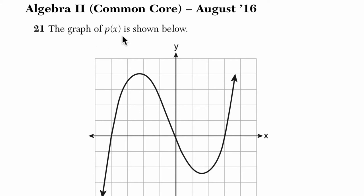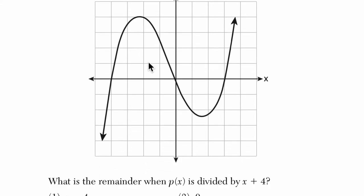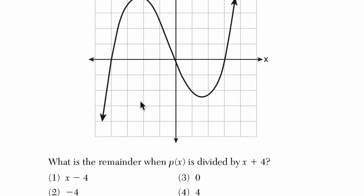It says that the graph of P of X is shown below. So here's our graph. What is the remainder when this function is divided by X plus 4? Alright, so there's a remainder theorem.